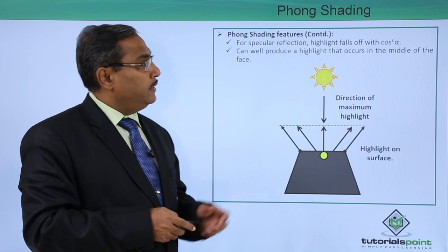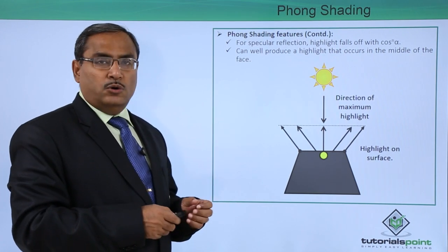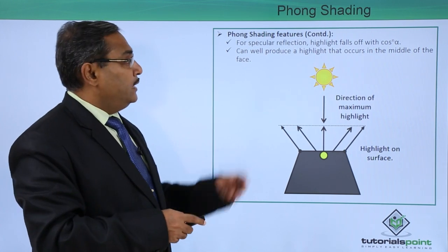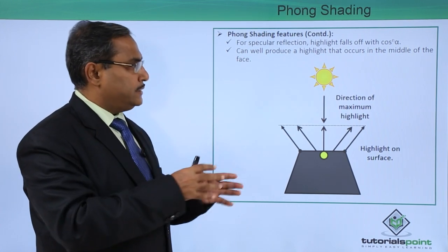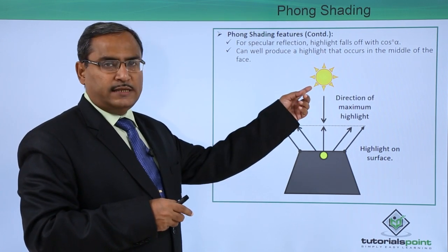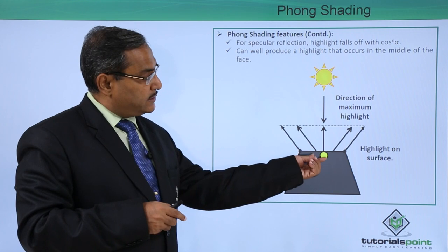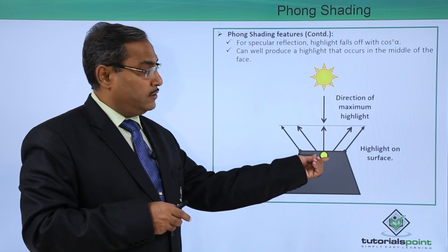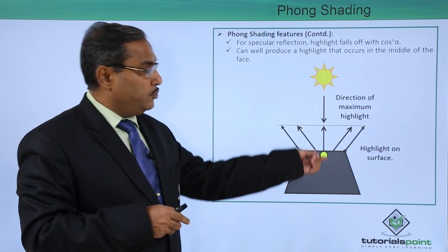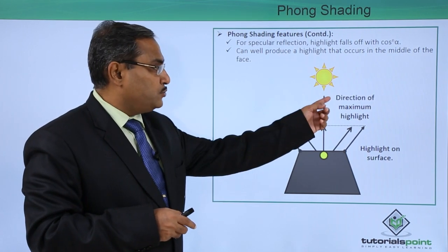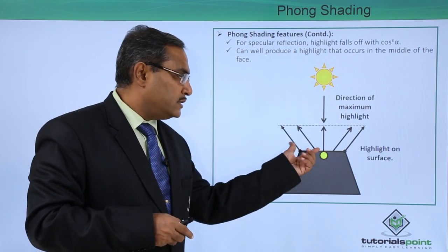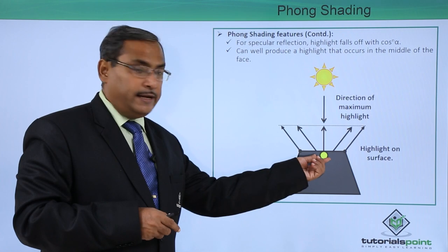For specular reflection, the highlight falls off with the increase of the value of cos(alpha) to the power of n. This produces a highlight that occurs in the middle of the face. Here you can see, if this is the source of light, the highlight will appear here — where more of the rays are reflected — so the direction of maximum highlight determines where the highlight on the surface will occur.